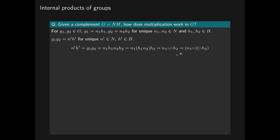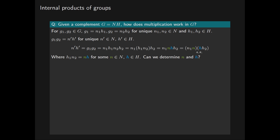We have that N' equals N1 multiplied by green N, and H' equals blue H multiplied by H2. So in a sense, N' and H' are half determined by these expressions. The next question is: can we determine what green N and blue H are? Because this is all we need to establish which element of our group G the product G1·G2 actually is.